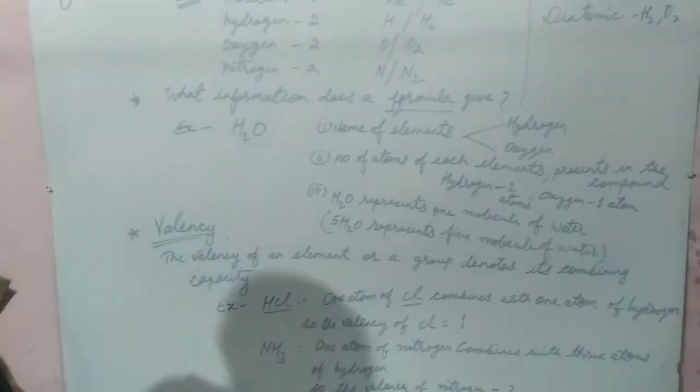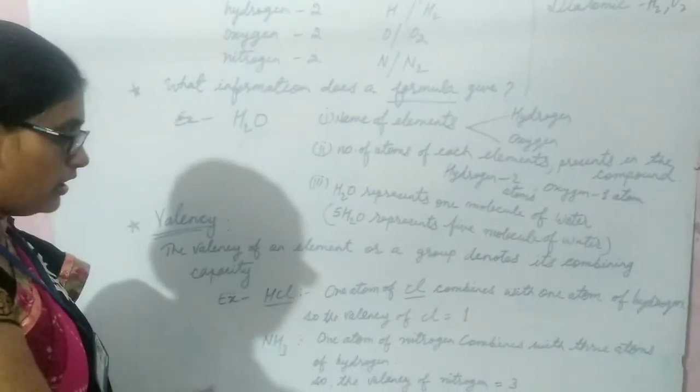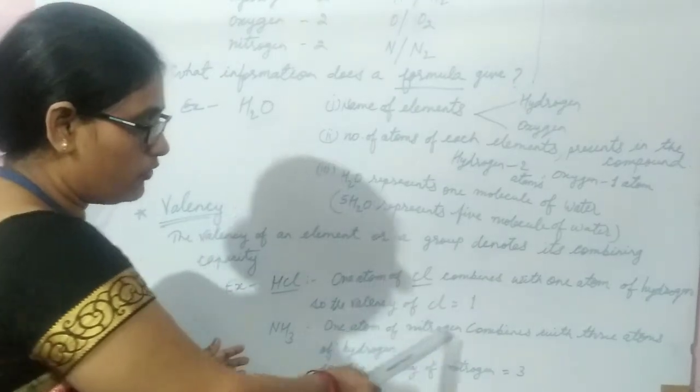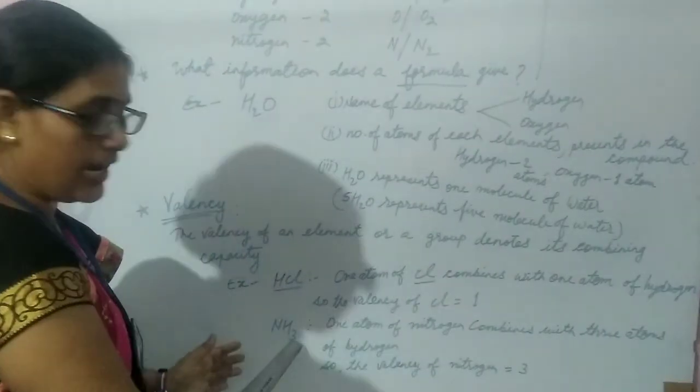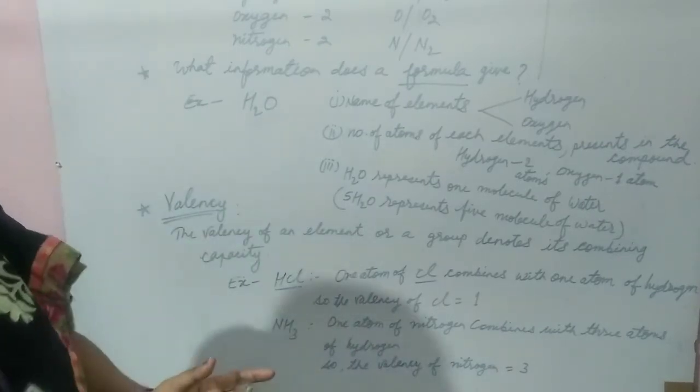Similarly, the second example is ammonia, NH3. In the NH3 formula, one atom of nitrogen combines with three atoms of hydrogen. It means the valency of nitrogen is three.